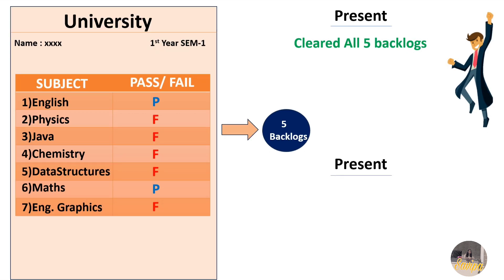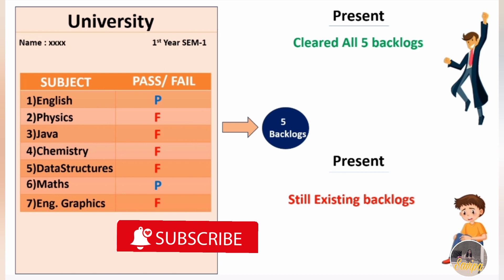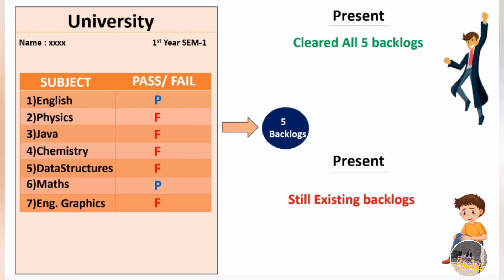The second scenario is: at the time of uploading task documents, you still have five or six active backlogs. In that case, there is no option to upload that many backlogs at once. Accenture has provided only four fields for the backlog section. If you haven't cleared them, you can upload a maximum of four backlogs only. So if you have cleared them, you don't need to upload in the backlog section — only in the cleared section, which I'll explain shortly.